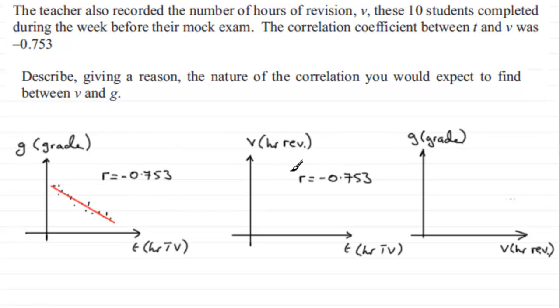We're also told in this part that the correlation coefficient between T and V is minus 0.753. So again, negative correlation. So I could expect the points to be scattered something like this, around a line looking like this. So in other words, what we've got is that the more hours of TV that are watched, then the less hours of revision are done.